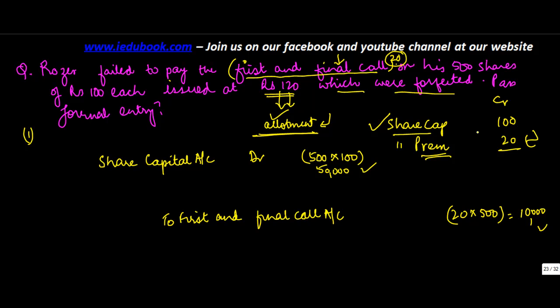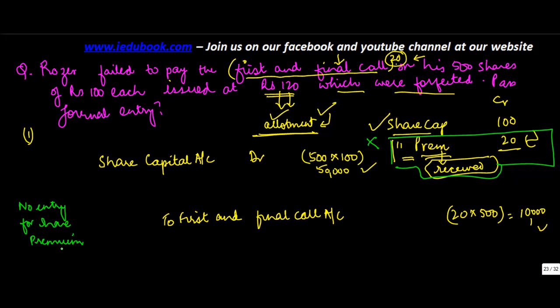Now there was a share premium of 20 rupees here, so what do you do with this? In this particular case, what we notice is that this share premium has been received by the company. How do we know this? Because what has not been paid is only the last installment of 20 rupees, which means that the allotment money has been paid. And the assumption is that you receive the premium at the time of allotment. When you receive the allotment premium amount at the time of allotment, then if the shares are forfeited, you do not pass any entry for share premium. No entry for share premium received.